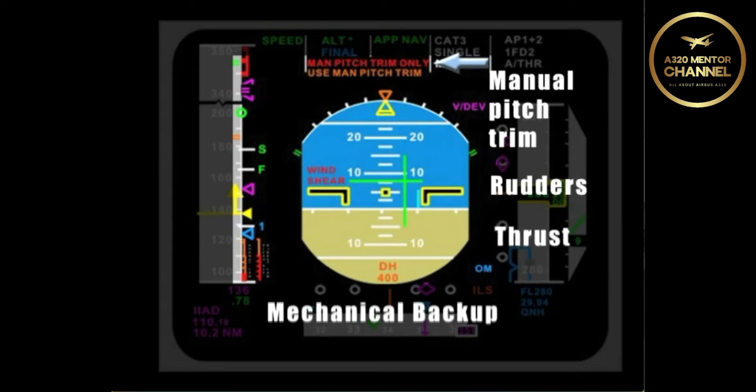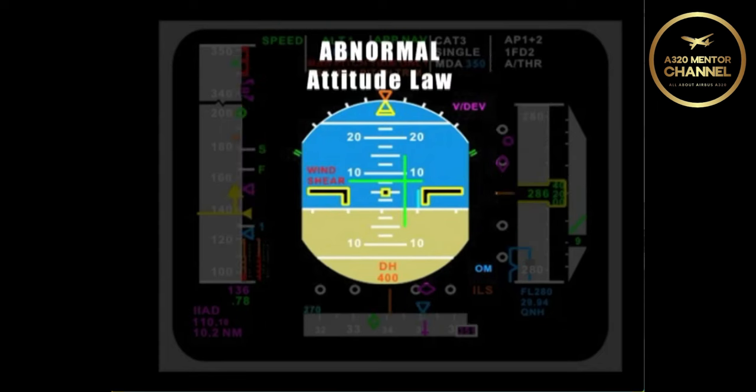You also have thrust capabilities. Asymmetric thrust really doesn't do much for you, but combined thrust really does play a major factor in pitch. Add thrust to the low slung engines on the 320 gives you a pitch up. Reduce thrust and you get pitch down.